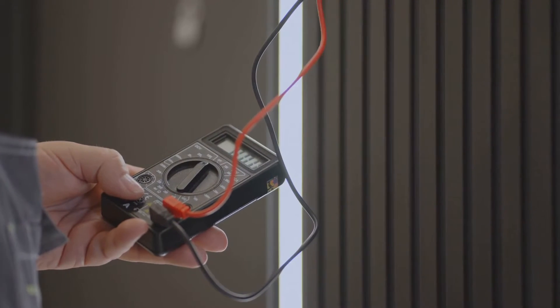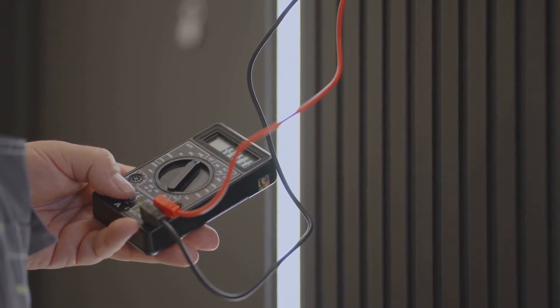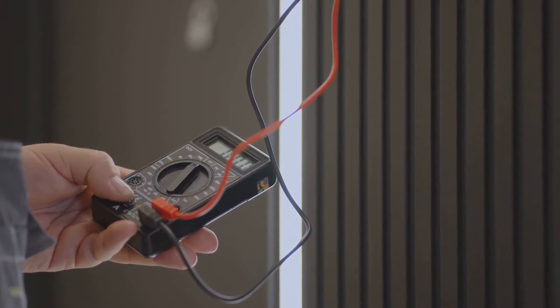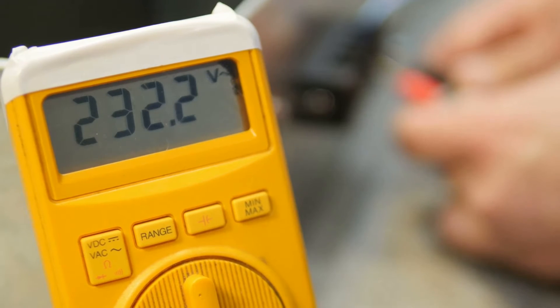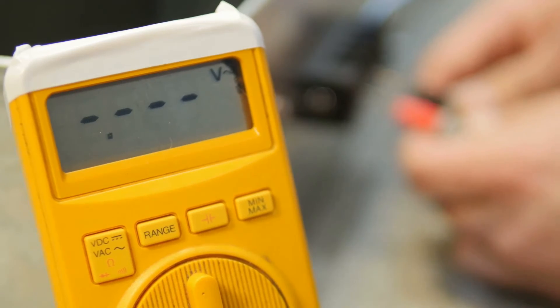Now, connect the test lead from the power supply to the COM or common terminal on the multimeter. The other test lead connects to the MA or current measurement terminal.